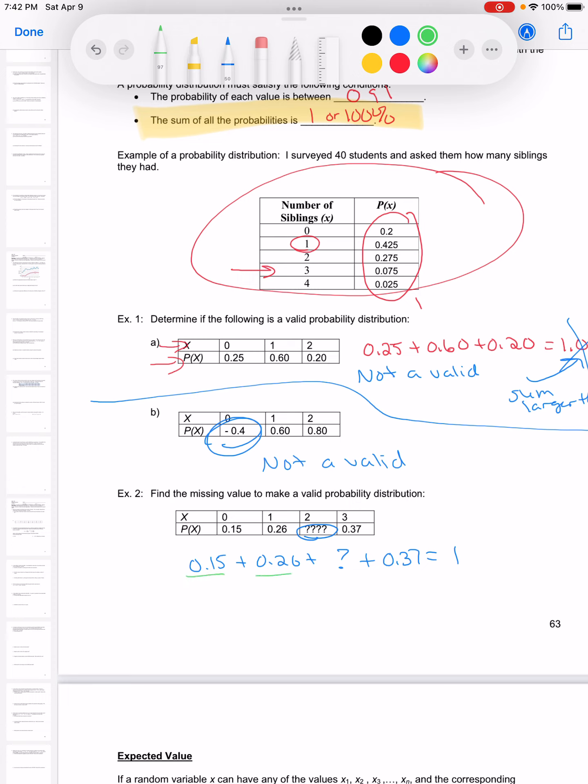I'm going to combine all my like terms. So I'm going to add all those up. That gives me 0.78 plus that question mark has to equal 1. Solving for the question mark, that missing number is 0.22.